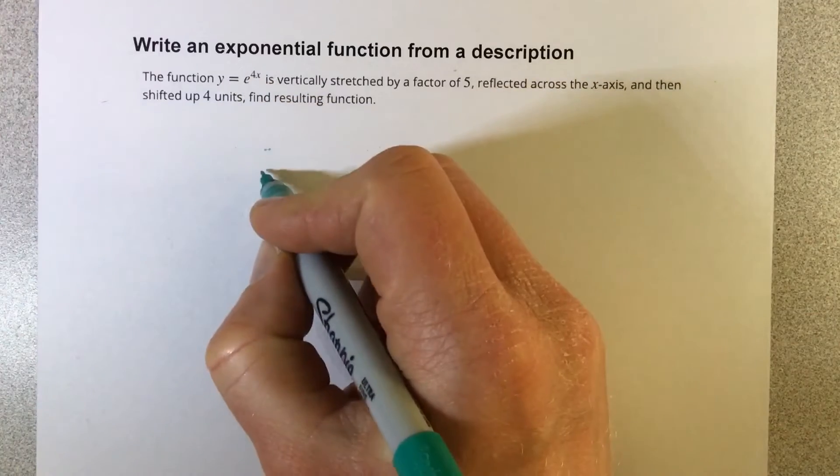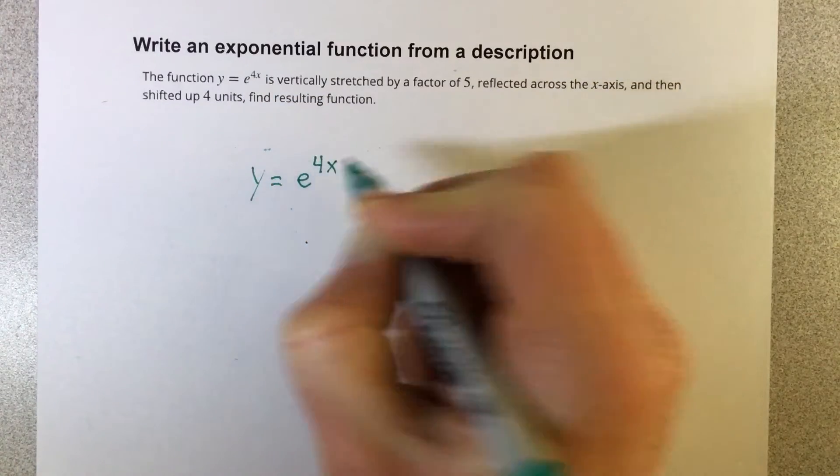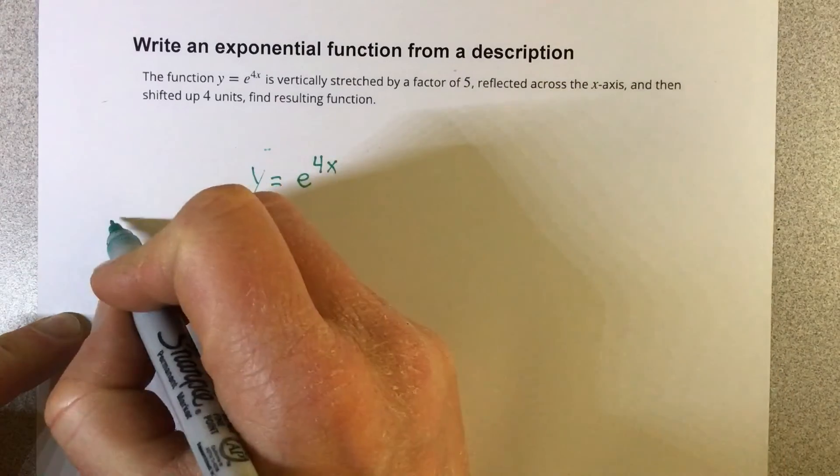So we're going to start by writing the original function and let's add piece by piece. Let's start with the vertical stretch.